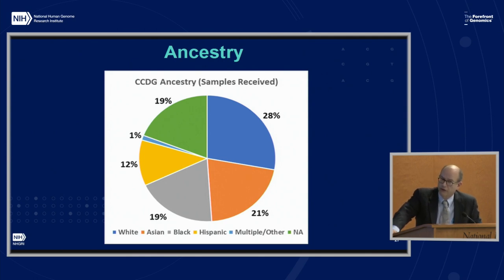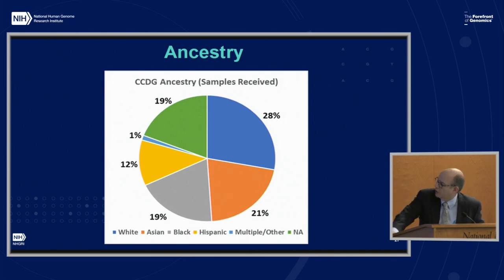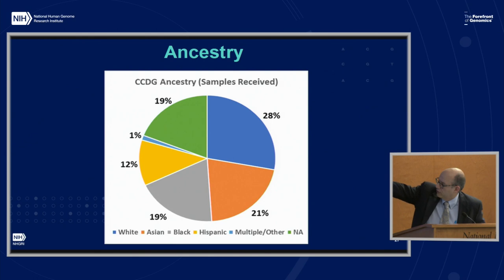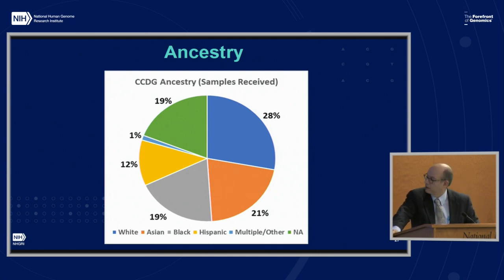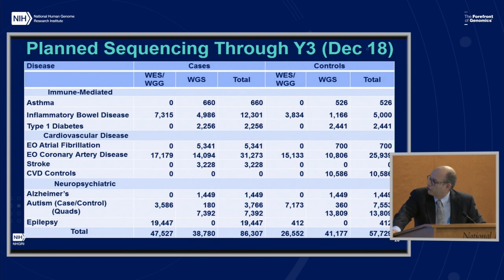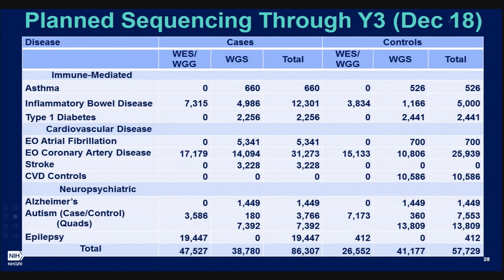This is a brief look at ancestry for samples received. The main point is that even including the samples we don't know the ancestry for, just over half the samples are of non-European ancestry. The sequencing is spread out over eight different disease phenotypes, which means it's taking a while to build up sufficient numbers to do analyses — and these analyses are just starting. There are three umbrella disease working groups: immune-mediated, cardiovascular, and neuropsychiatric.